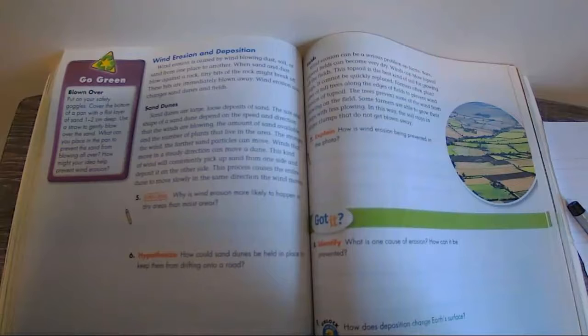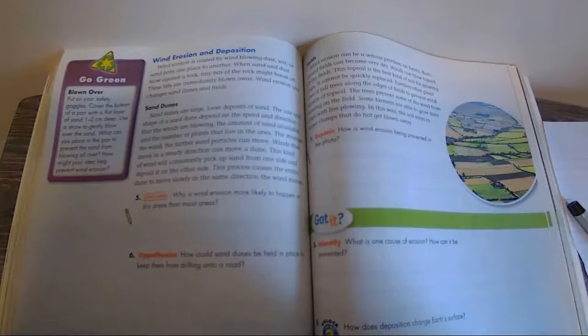Fields. Wind erosion can be a serious problem on farms. Bare fields can become very dry. Winds can blow topsoil off of the fields. And this topsoil is the best kind of soil for growing crops. It cannot be quickly replaced.